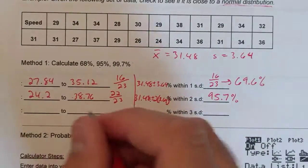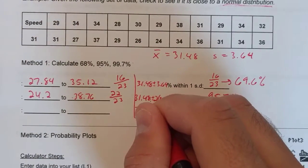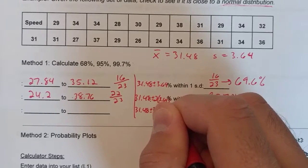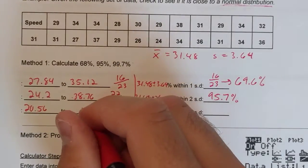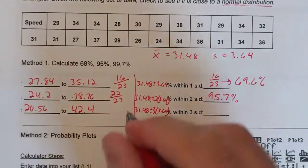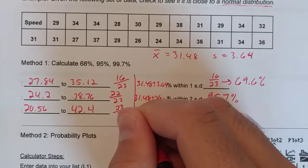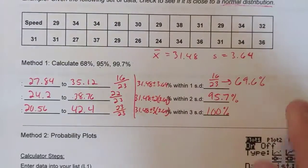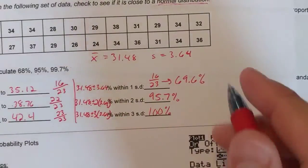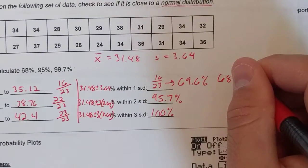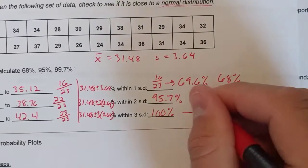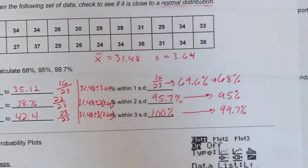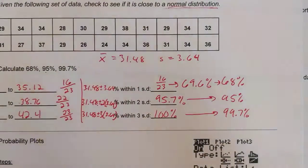Let's do one more. It's going to be 31.48 plus or minus three times the standard deviation 3.64. That window is 20.56 and 42.4, and all 23 data values fall in that window which is a hundred percent. Now if you compare these three percentages with the empirical rule they're very very close. So you can say this data set is approximately normal based on the percentages. All three have to match up pretty well. In this case all three do.